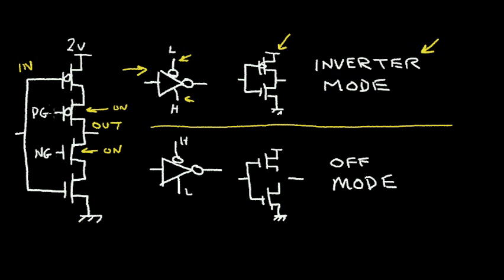The other mode of operation is when this PFET transistor and this NFET transistor are both in the off condition. So when the gate of the NFET is low and the gate of the PFET is high, both these transistors are off, and the equivalent circuit has the output that is detached. The PFET is not connected to the NFET, and this circuit essentially does nothing. I'm going to refer to this mode as the off mode.